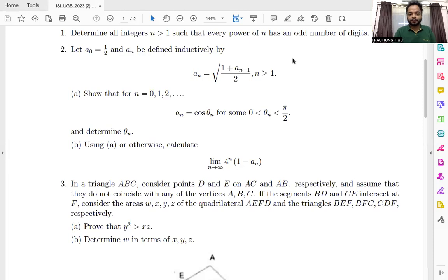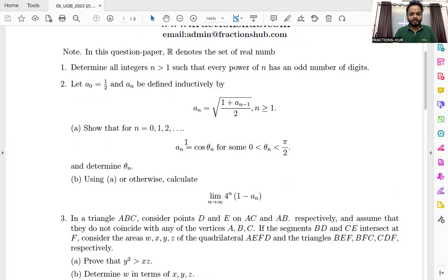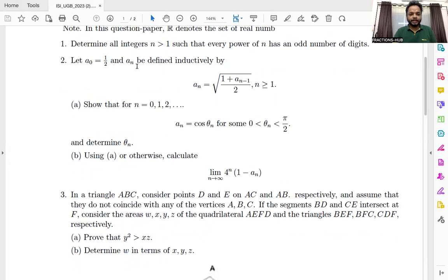So the problem is here. Let A0 be equals to half. So the first term of the sequence is equal to half and A_n we define inductively by A_n is equals to root over of 1 plus A_{n-1} by 2, n greater than equals to 1.